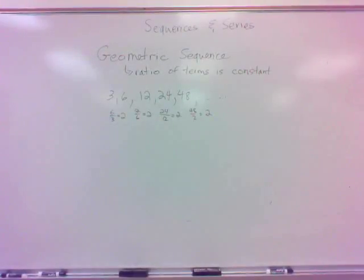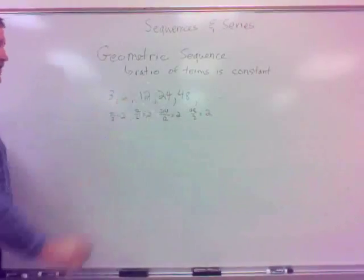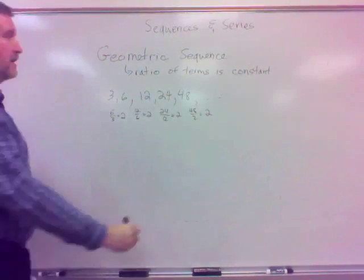So the ratio of terms, or another way you could look at it is multiply by 2, multiply by 2. I'm multiplying by the same thing each time to get the next term. But that translates into it being a ratio of terms.